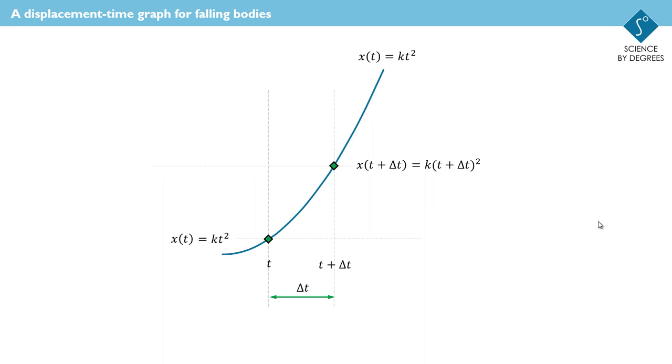Well, we can calculate the gradient of the line between the two points on the graph. And to do that we need delta x, the change in displacement, which we can work out from the two values of x, and delta t, which we've already labelled on the graph as delta t.